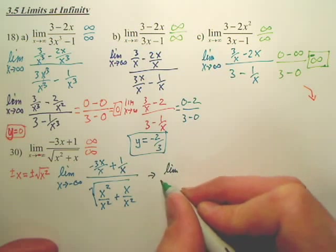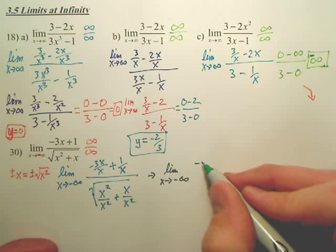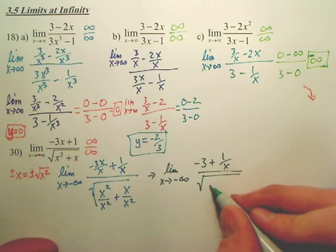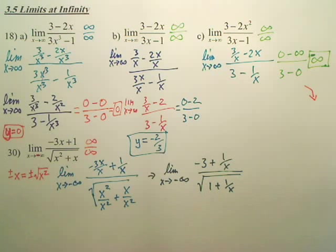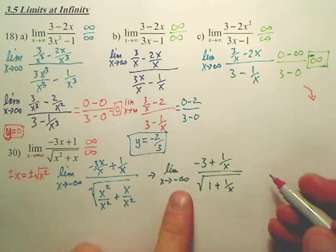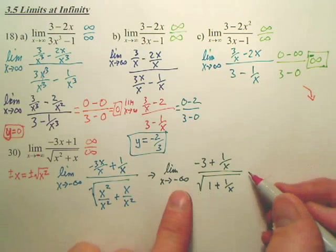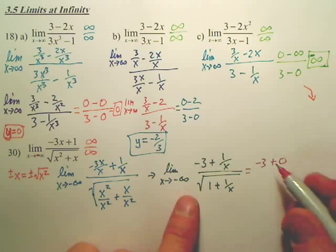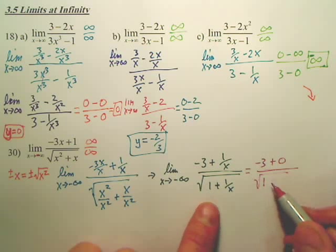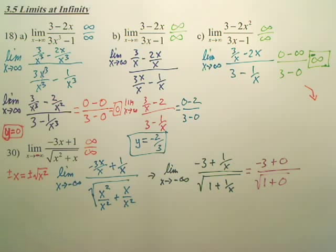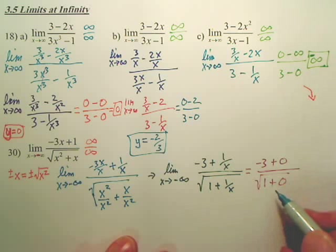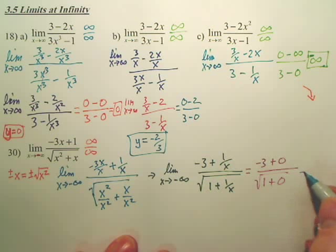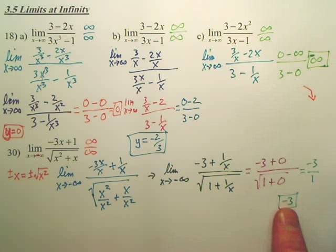We now have the limit as x approaches negative infinity of (negative 3 + 1/x) over the square root of (1 + 1/x). Can we plug in negative infinity? Yes. That becomes negative 3 plus 0 over the square root of 1 plus 0. Square root of 1 is 1, so doesn't it look like we're going to have negative 3 over 1? Is the answer negative 3? So as we go to negative infinity, the horizontal asymptote is negative 3.